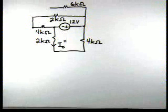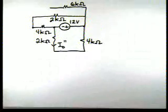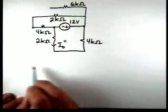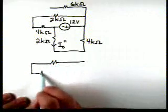There's our circuit. And again, if we look, that 6k has no impact on the problem. And if we notice, these two resistors in series, so we could redraw this circuit as follows.